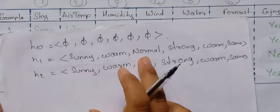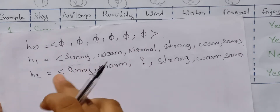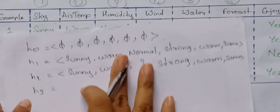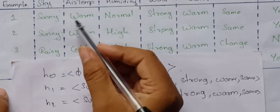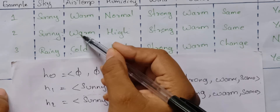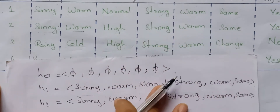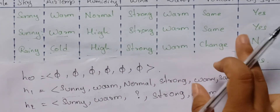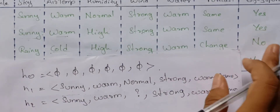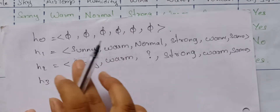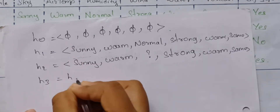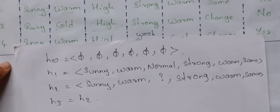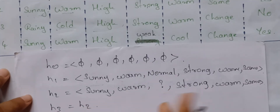We will now refer to H2. H3 — is it positive or negative? H3 is a negative example. Because it is negative, we do not update the hypothesis. We keep H2 as it is.